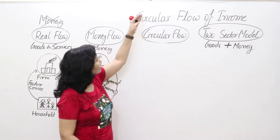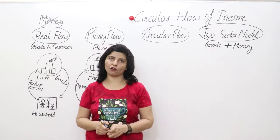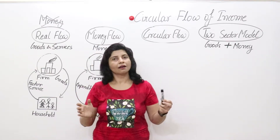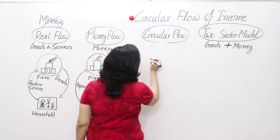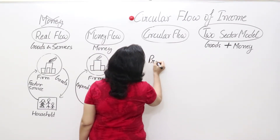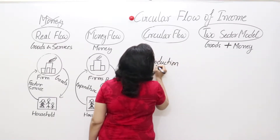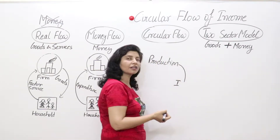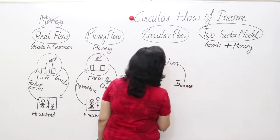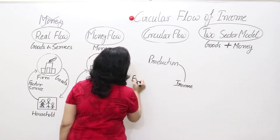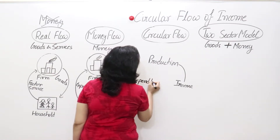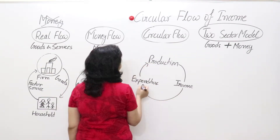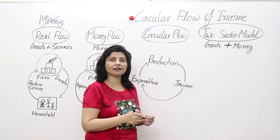Now we come to circular flow of income. Circular flow is the combined form of real flow and money flow. In this, we discuss three phases of the economy: first, the production phase; second, the income phase, which is generation or distribution of income; and third, the expenditure phase.